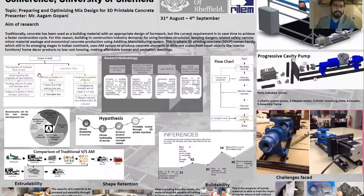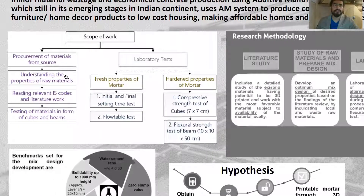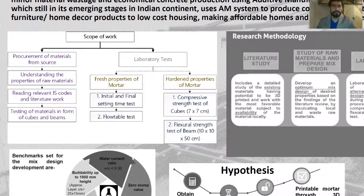As we can see here, the scope of the work was divided into two parts: study of the materials from its source and understanding its properties — both chemical as well as physical — reading several Indian codes based on locally available materials, and laboratory tests associated with the materials.